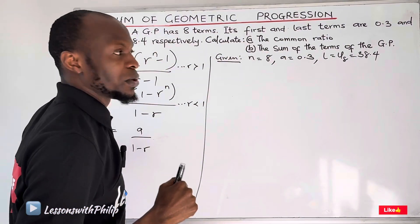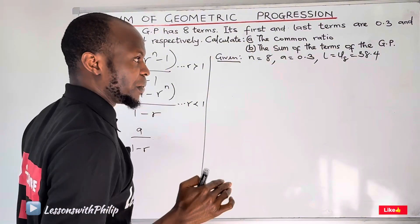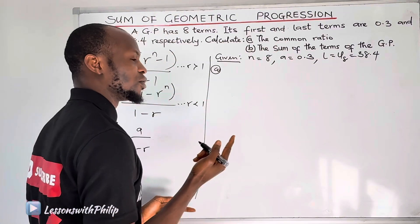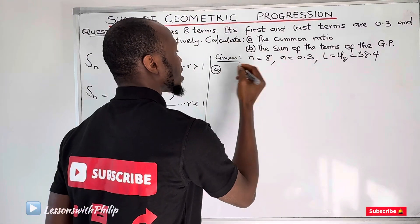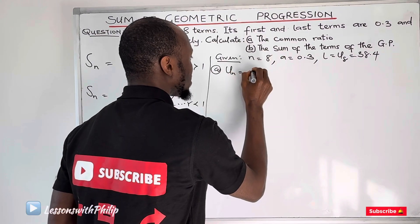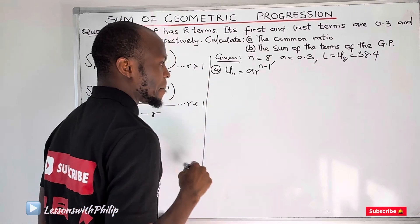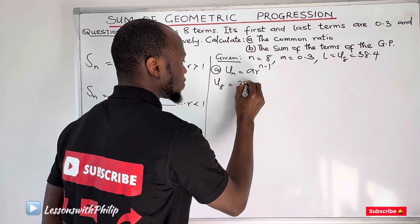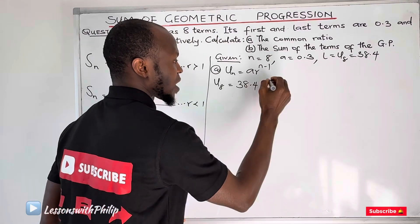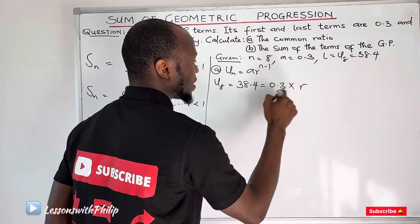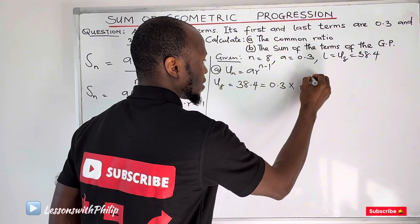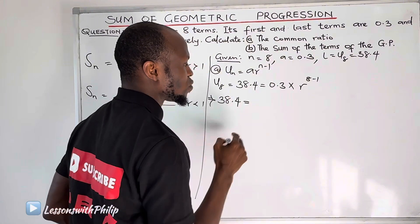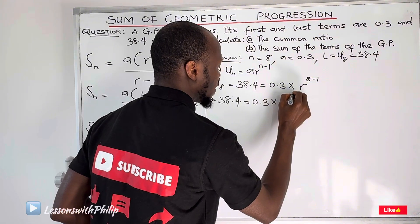I'm asked to calculate the common ratio and then the sum of the GP. To find the common ratio, I use the nth term formula: first term multiplied by common ratio raised to power n minus 1. My 8th term equals 38.4, so: 38.4 equals 0.3 multiplied by r raised to power 7, since n minus 1 equals 8 minus 1 equals 7.